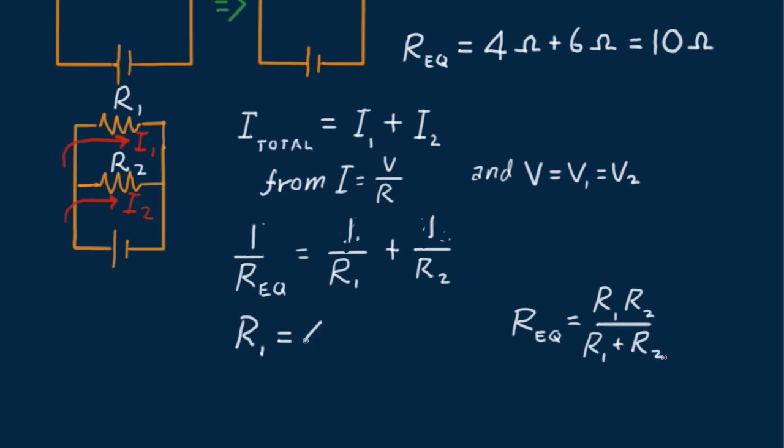Suppose, as before, R sub 1 is 4 ohms and R sub 2 is 6 ohms. The rule tells us that R sub equivalent equals 4 times 6 divided by 4 plus 6 equals 2.4 ohms. So the equivalent resistance of the two branch circuit is 2.4 ohms. Notice this is a lot less than the 10 ohms for the same two resistors in series.